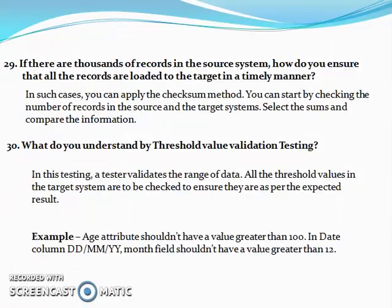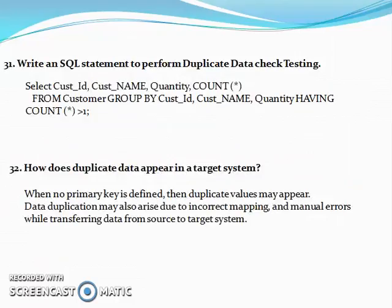If there are thousands of records in a source system, how do we ensure that all the records are loaded into the target in a timely manner? What do you understand by threshold value validation testing? Write a SQL statement to perform duplicate data check testing. How does duplicate data appear in a target system?